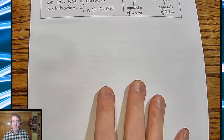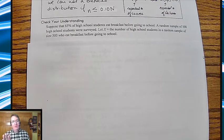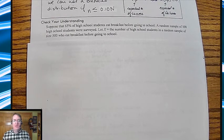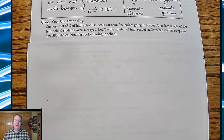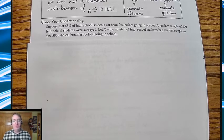So coming down here, again, you can pause now, pause in a second. Let's say 65% of high school students are thought to be eating breakfast before going to school. Okay, we pick a random sample of 500 high school students that were surveyed. X is going to be the number of high school students in the random sample of size 500 who eat breakfast before going to school. Okay, answer the questions. Come on back and check your work. We'll see you in a minute.